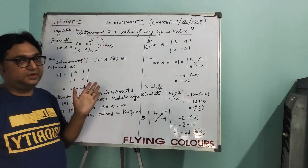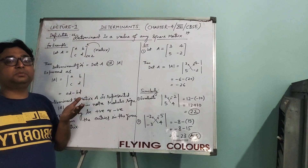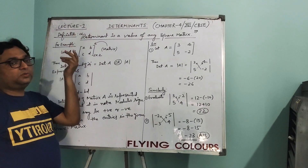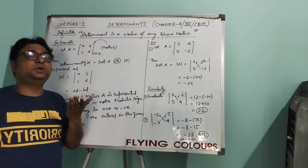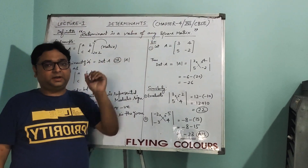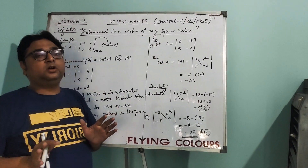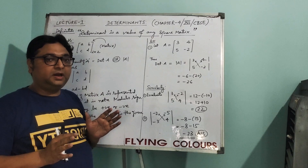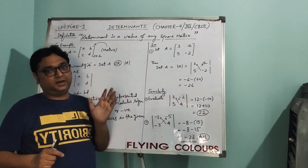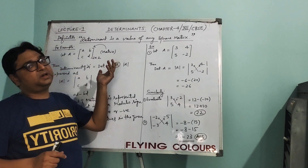In previous lectures, we have done the matrix. So what is a matrix? A matrix is a rectangular arrangement of numbers in rows and columns. Now we come to the next chapter, that is determinant. A determinant is a real number which is associated with every square matrix. In order to find the determinant of any matrix, the matrix must be square.